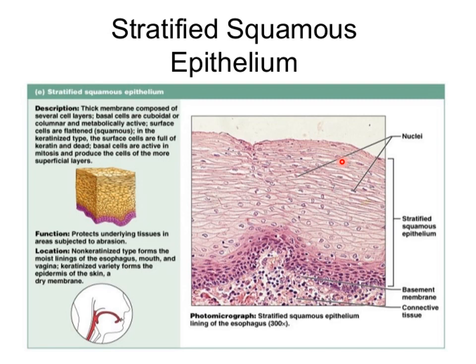The non-keratinized type of stratified squamous epithelium lines the oral cavity, oesophagus, and vagina, whereas the keratinized variety forms the epidermis of the skin. The keratinized stratified type also lines the hard palate and the papillae of the tongue.